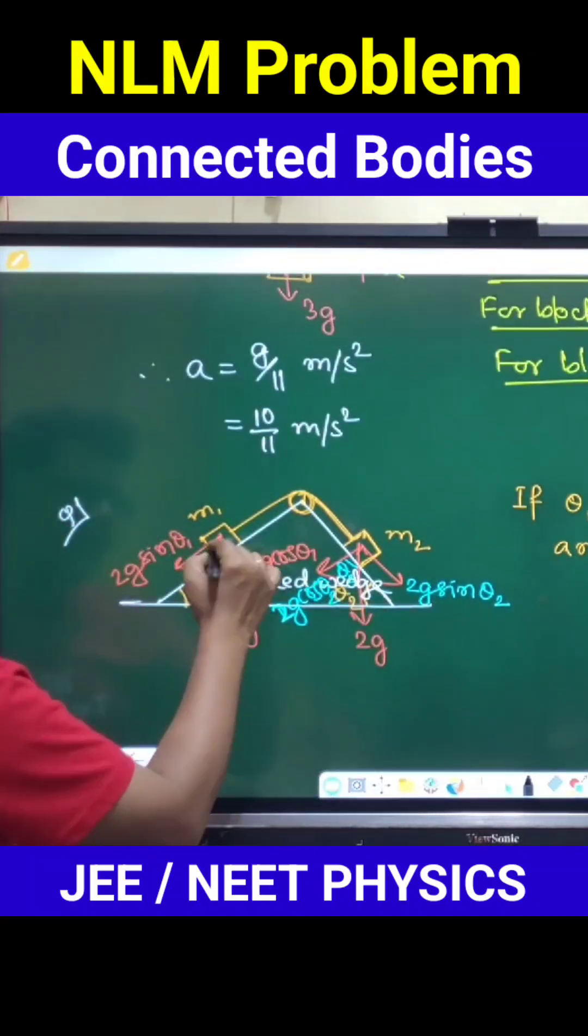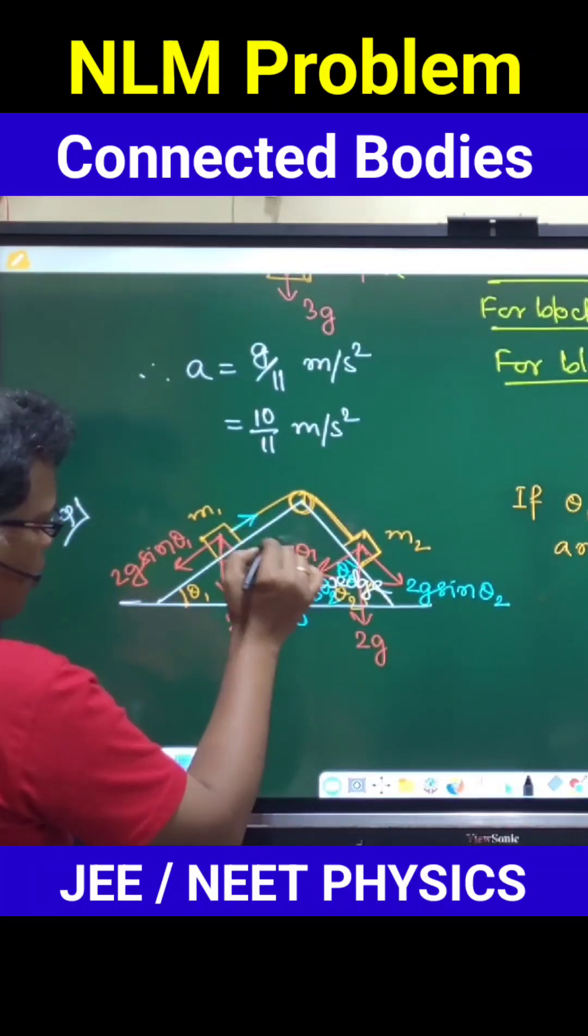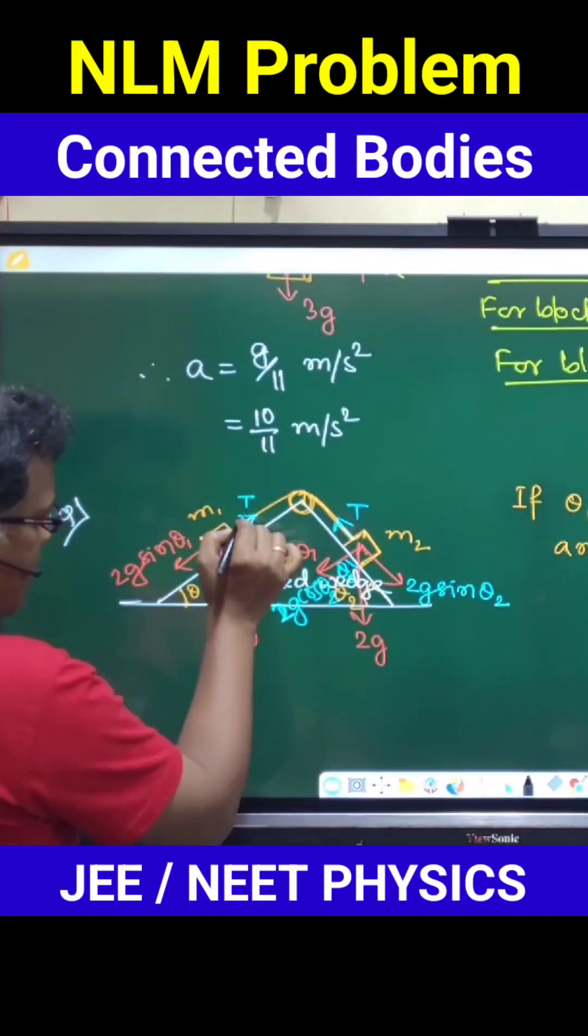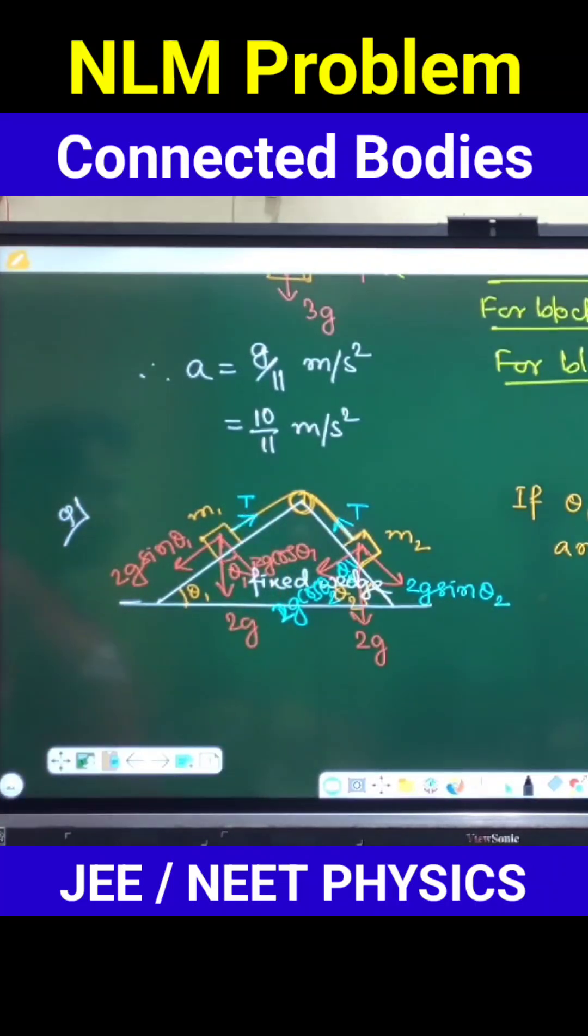And being they are connected by one single light string, throughout the string tension must be same. So tension need to be taken same at both ends of the string where they are connected with m1 and m2.